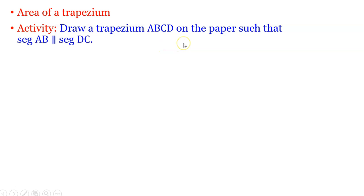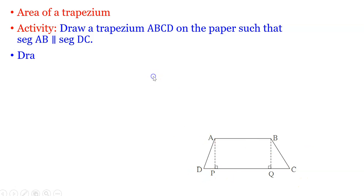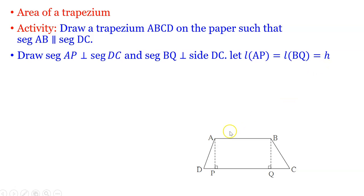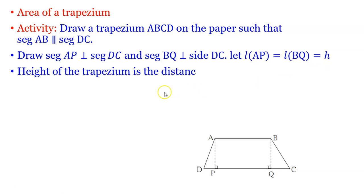Draw a trapezium ABCD on the paper such that segment AB is parallel to segment DC. Draw segment AP perpendicular to segment DC, and segment BQ perpendicular to segment DC as well. The length of AP equals the length of BQ, and we treat that as H. Since AB and DC are parallel, the distance between them is equal and we treat it as H — the height of the trapezium, which is the distance between the parallel sides.